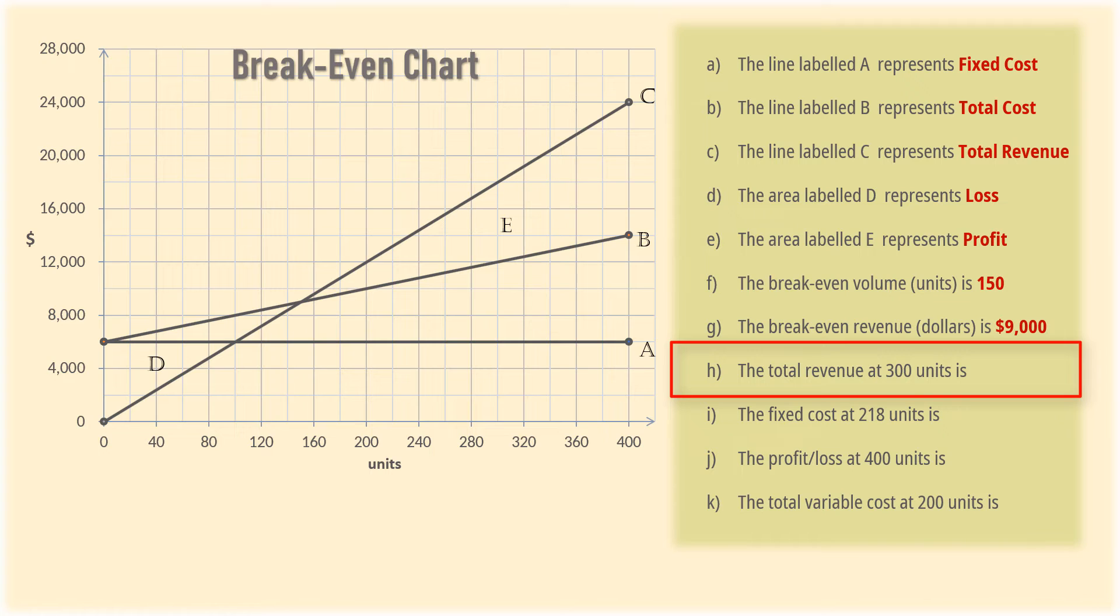In H, we want the total revenue at 300 units. That is, the midpoint of 280 and 320 here. Tracing that to the total revenue line, we correspond to the midpoint of $16,000 and $20,000 here, which is $18,000.